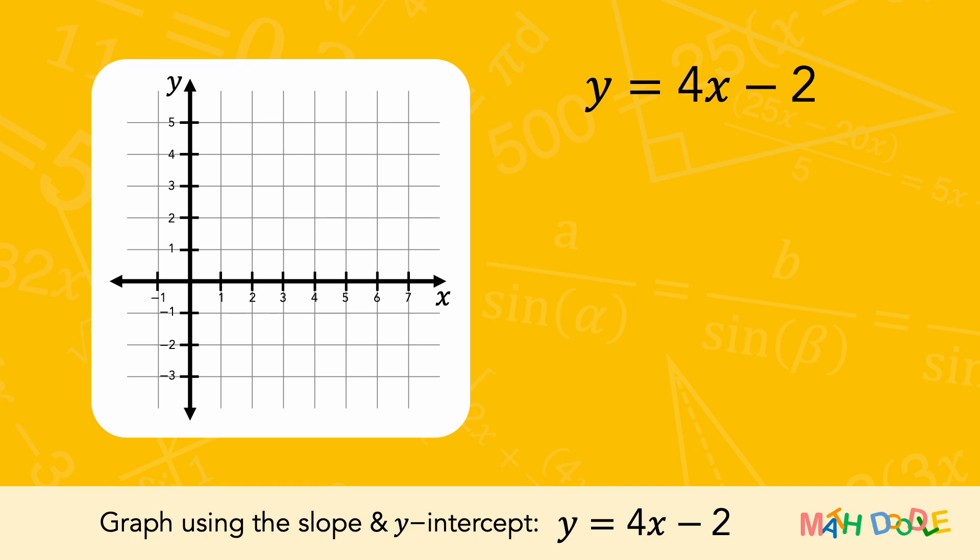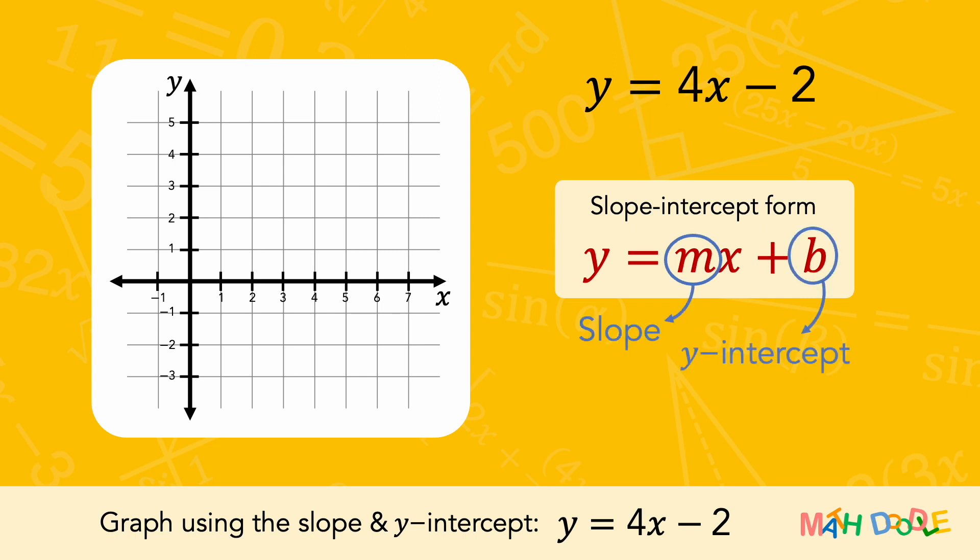To graph this equation, let's first compare it with the slope-intercept form. In the slope-intercept form, m in front of x represents the slope, and b represents the y-intercept.